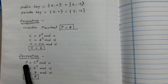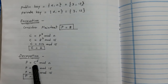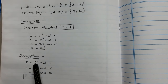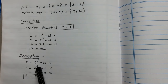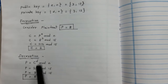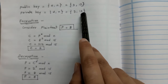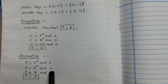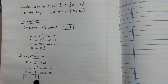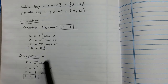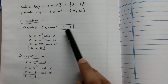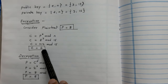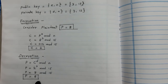For decryption, the formula is P = C^D mod N. The ciphertext is 2, D = 3, and N = 15. So P = 2^3 mod 15 = 8 mod 15 = 8. We recover the original plaintext 8. So after encrypting plaintext 8 to get ciphertext 2, decryption correctly recovers plaintext 8. This is how RSA algorithm works.